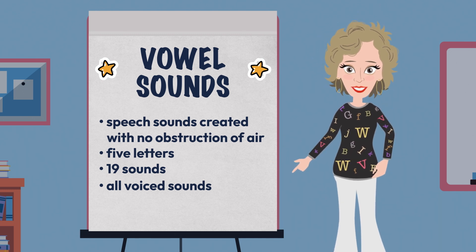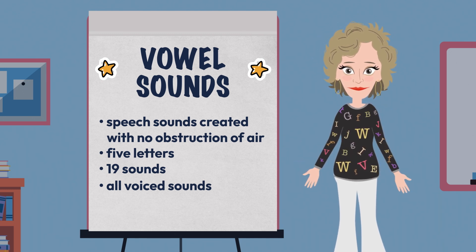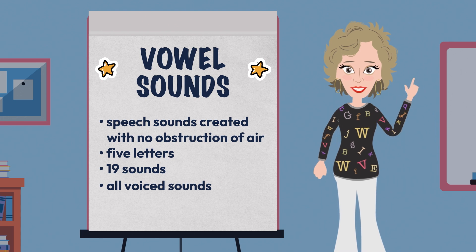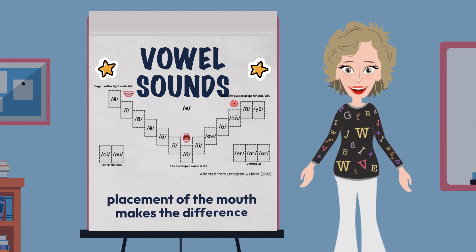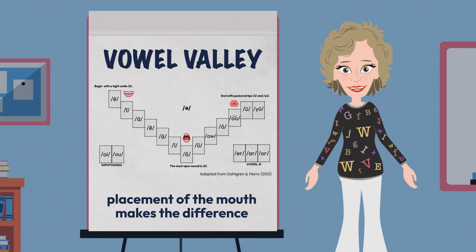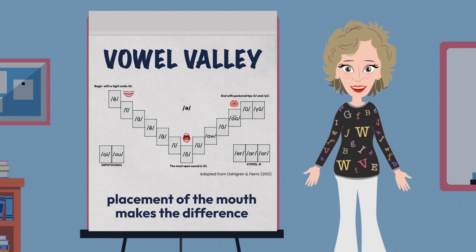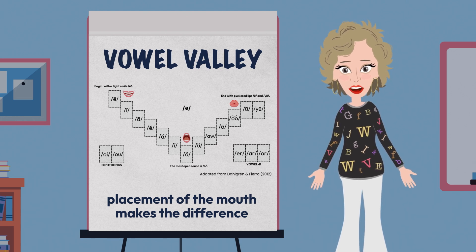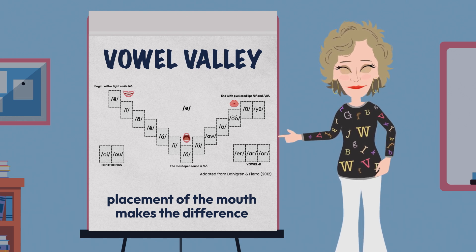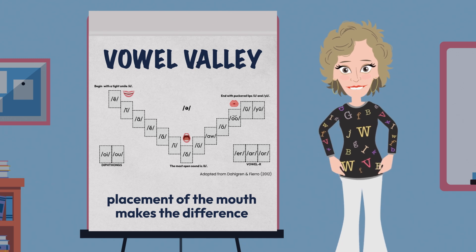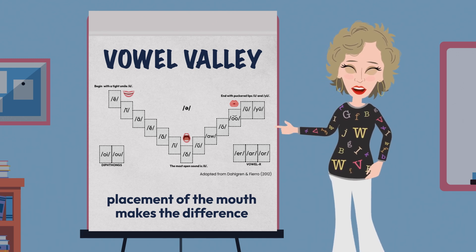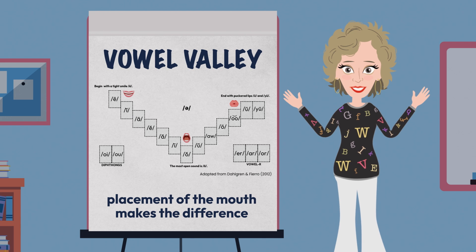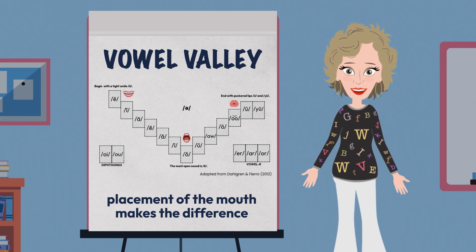It is easier to feel the vibration from the vocal cords being engaged when pronouncing vowel sounds. You engaged in a fun activity using the vowel valley chart to help you see how the sound difference in the vowels based on placement of the mouth goes from slightly opened to wide opened and reversed. The manner is open, but it is the placement of the mouth that makes the difference in vowels.